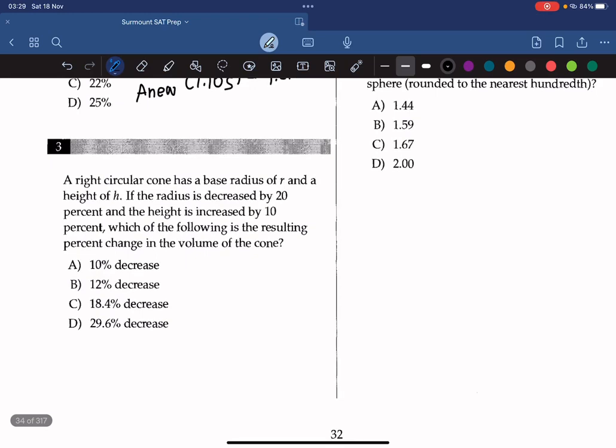A right circular cone has a base radius of R and a height of H. If the radius is decreased by 20% and the height is increased by 10%, which of the following is the resulting percentage change in the volume of the cone?